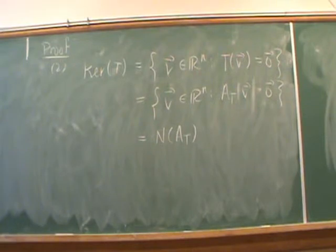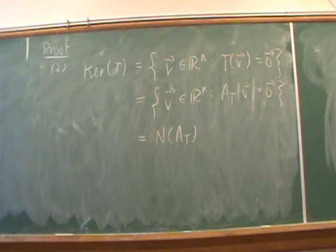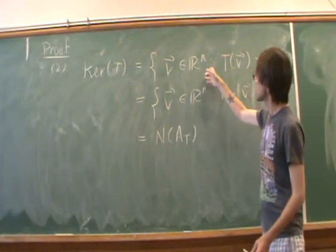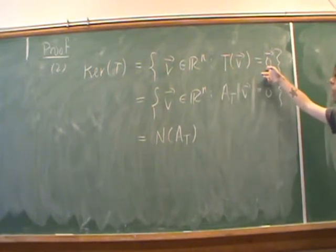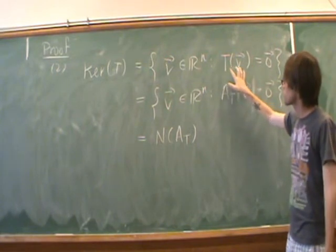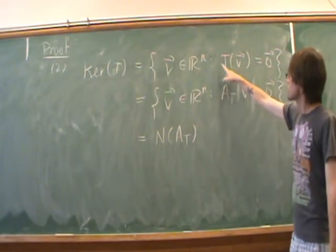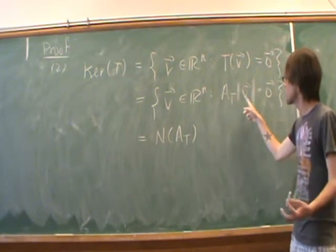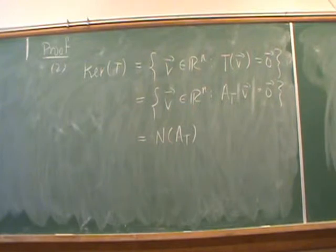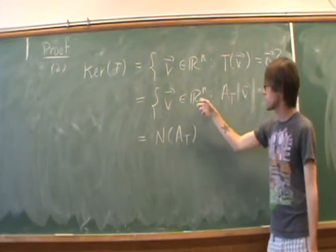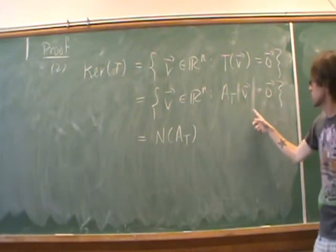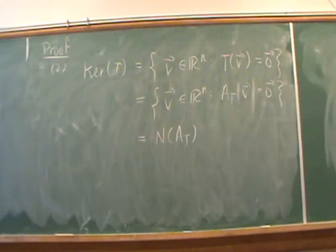Showing that the kernel of T equals the null space of our standard matrix is a bit easier. The kernel of T is the set of all vectors in Rn such that T maps the vector to the zero vector of Rm. Using the fact that T can be written as matrix multiplication on the left, T of V equals A sub T times V. So we have the set of all vectors V in Rn that satisfy this homogeneous system, and we know that is the null space of matrix A sub T.